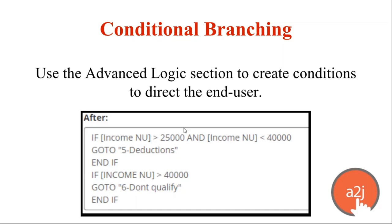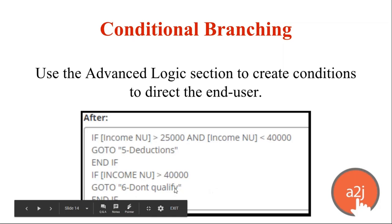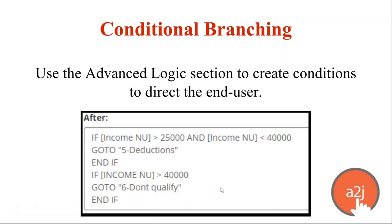For example: if income_NU — whatever they've told you their income is — is greater than $25,000 and less than $40,000, you want to take them to a question called 5-Deductions. For a legal services organization, your maximum income to help someone might be $35,000, but there may be deductions you can ask people about if they're in the $40,000 to $35,000 range that might help them get under that income limit. So if they're in that middle range between $25,000 and $40,000, you can go to a follow-up question about deductions, number of people in their home, bills — any follow-up that can be used to knock down their income.